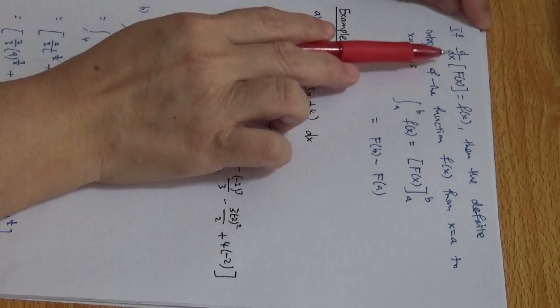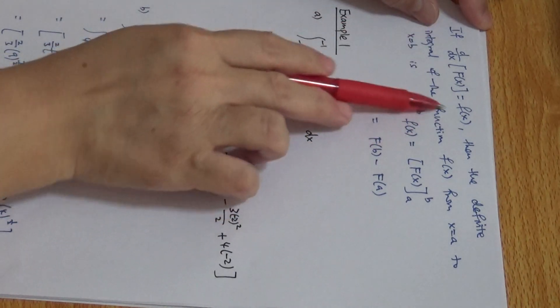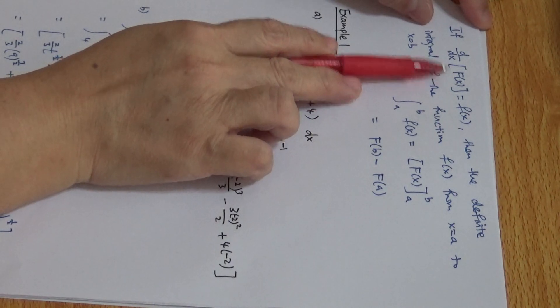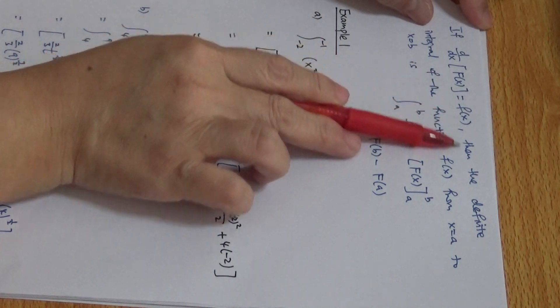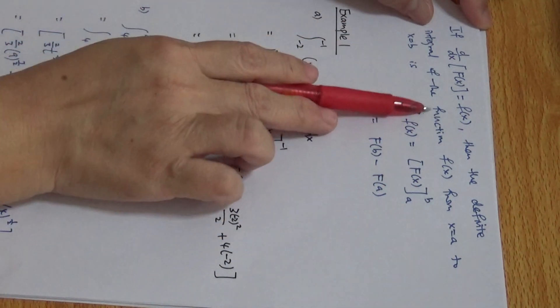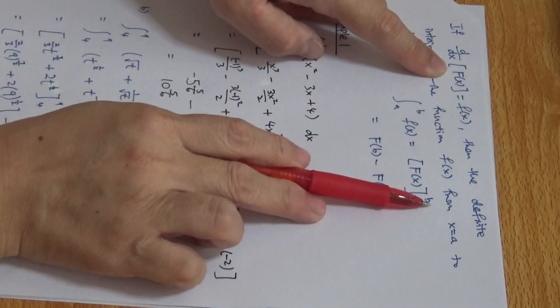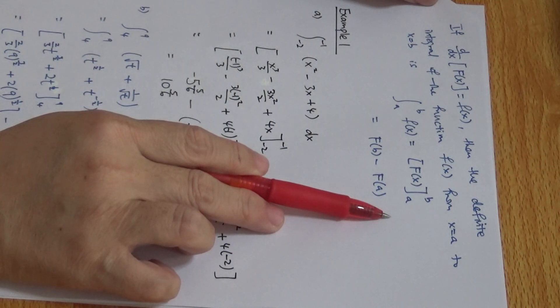Moving on to something we already know: if we differentiate F(x) and get f(x), then if we integrate f(x) we get back F(x). If d/dx of F(x) equals f(x), then the definite integral of f(x) from x equals a to x equals b is: integrate from a to b, I get F(x) from a to b. Note that for a definite integral there is no plus c — no constant — because it represents an area; there must not be a variable.